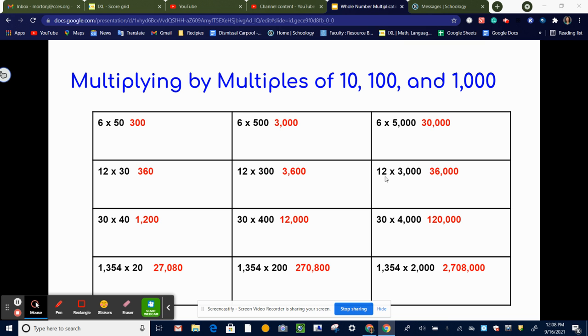And same thing here. 12 times 3 is 36, and then we're adding three zeros because it's 1,000.